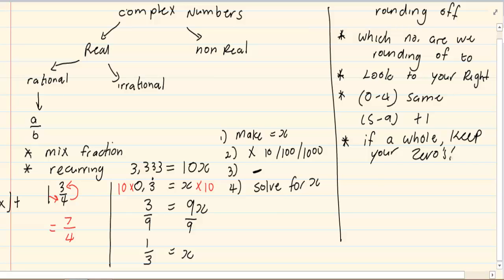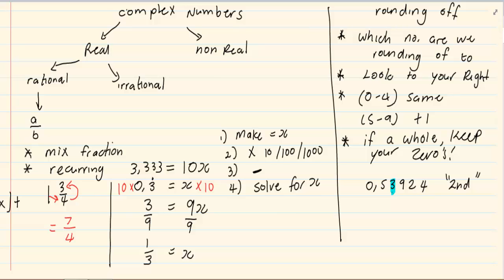Alright, for example, 0.53924. Round off to the second decimal. So we are rounding off to the second decimal. Mark your second decimal. Look to the number next to it on the right hand side. It's 9. 9 lies in the category of 5 to 9 which means that we are going to increase the 3 by 1. So our answer is 0.54.